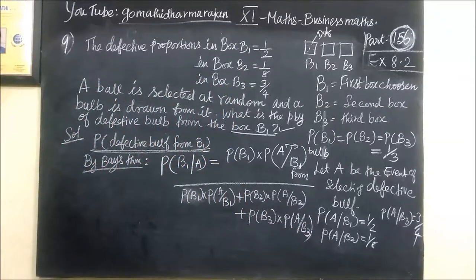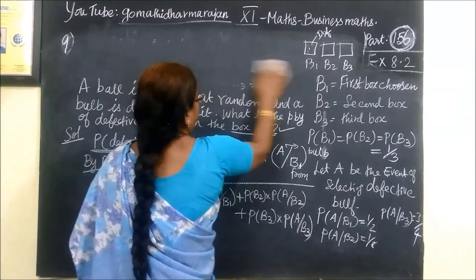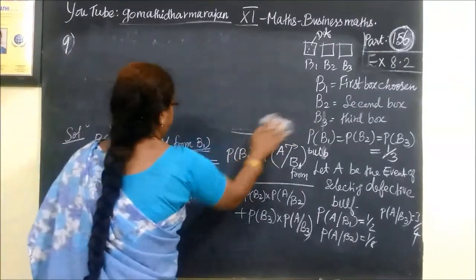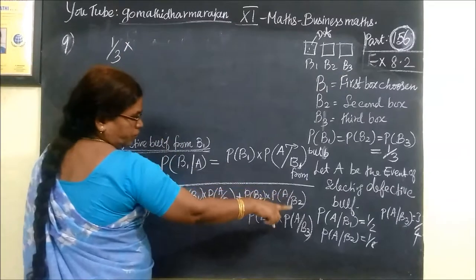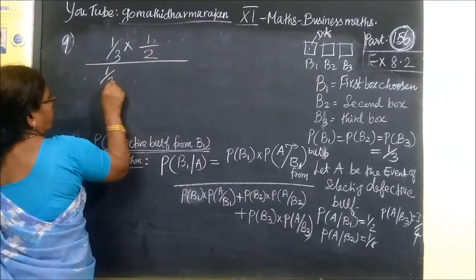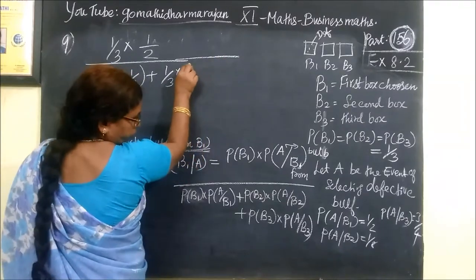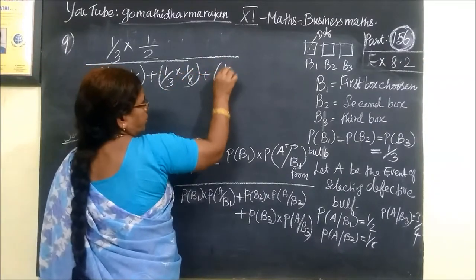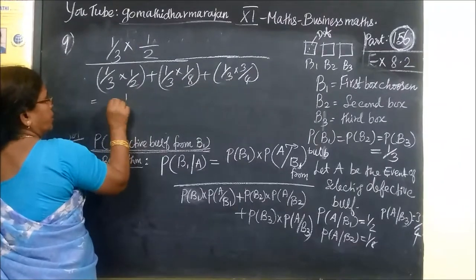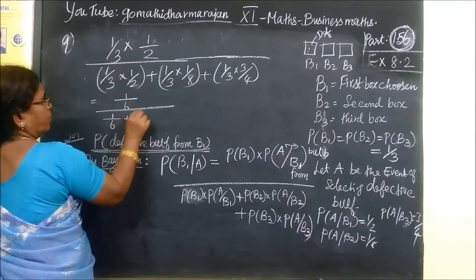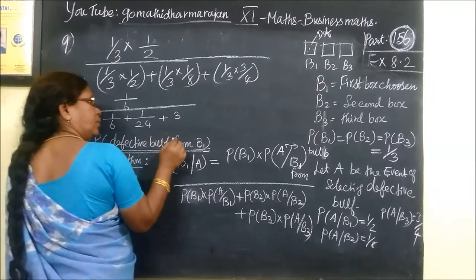So, that is equal to, now, P of B1 is 1 by 3 into 1 by 2. 1 by 3, 1 by 2 plus 1 by 3, 1 by 8 then plus 1 by 3, 3 by 4. So this is equal to 1 by 6, then 1 by 6 plus 1 by 24 then plus 3 by 4.